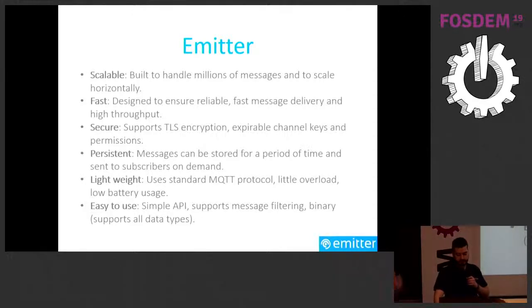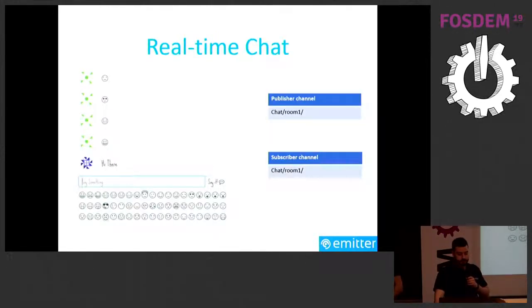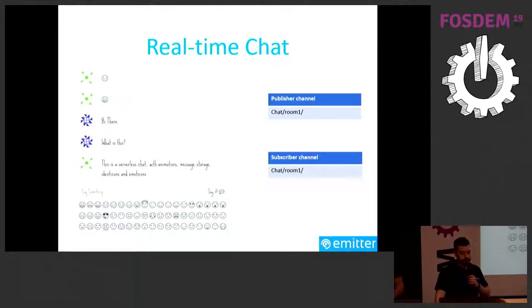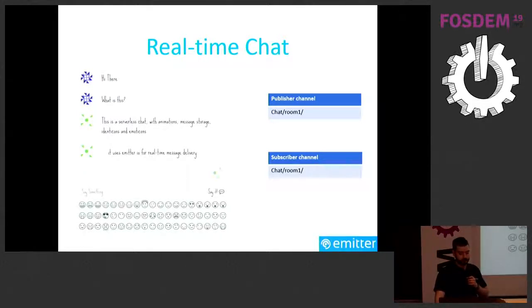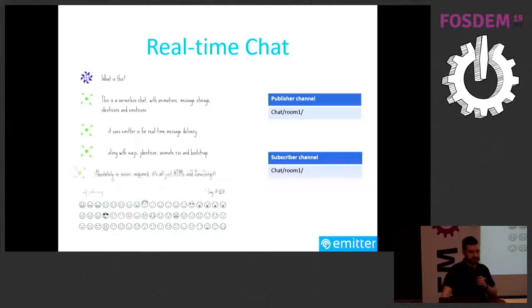The API is very easy to use. The first use case is a real-time chat — basically what we've discussed so far. You can have a sub-channel per room, and people subscribe and publish to those rooms. It's a sample we have on our website so you can try it and maybe use it on your own website.